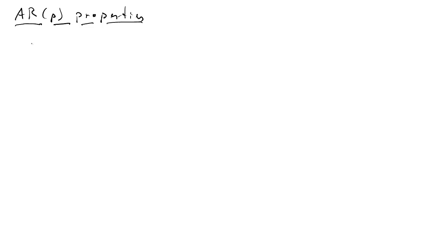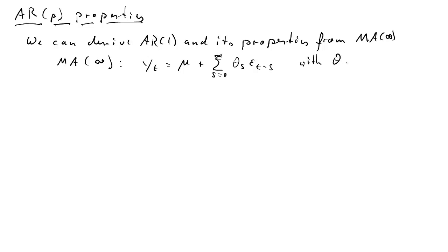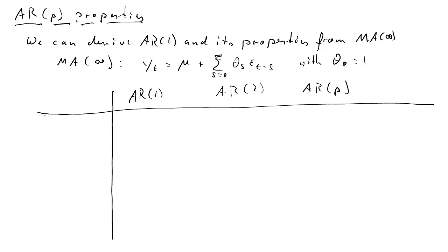In this clip we're going to talk about AR(p) properties, so properties of autoregressive processes of order up to p. We know that we can derive an AR(1) process from an MA(∞), and we're going to state that MA(∞) process here, remembering that theta naught is equal to 1. We could also derive the properties of the AR(1) from this MA(∞).